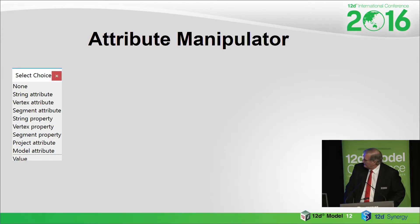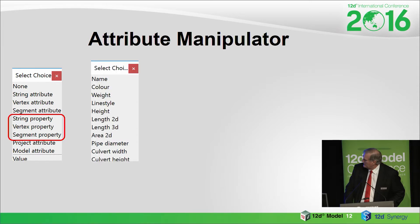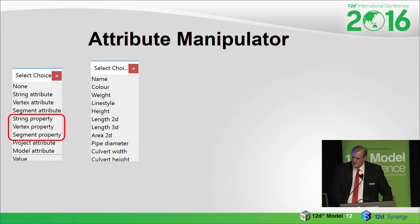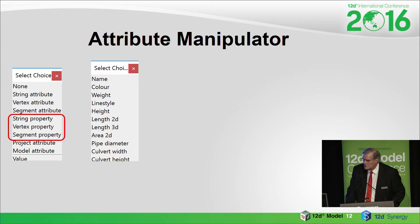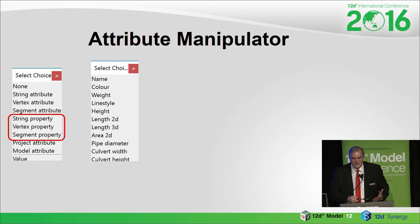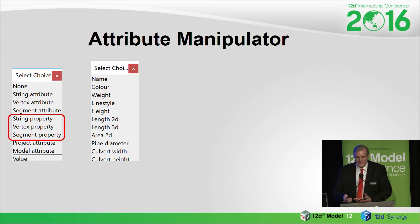When you actually get the choices for property, vertex, and segment properties, there are a lot of things available. For string properties, all these sorts of things — you can get those values and stick them into an attribute. So the name, colour, weight, line style, height, the 2D length, the 3D length of a string, the 2D area, diameters, culverts — all those sorts of things. You can take those and put them into an attribute.